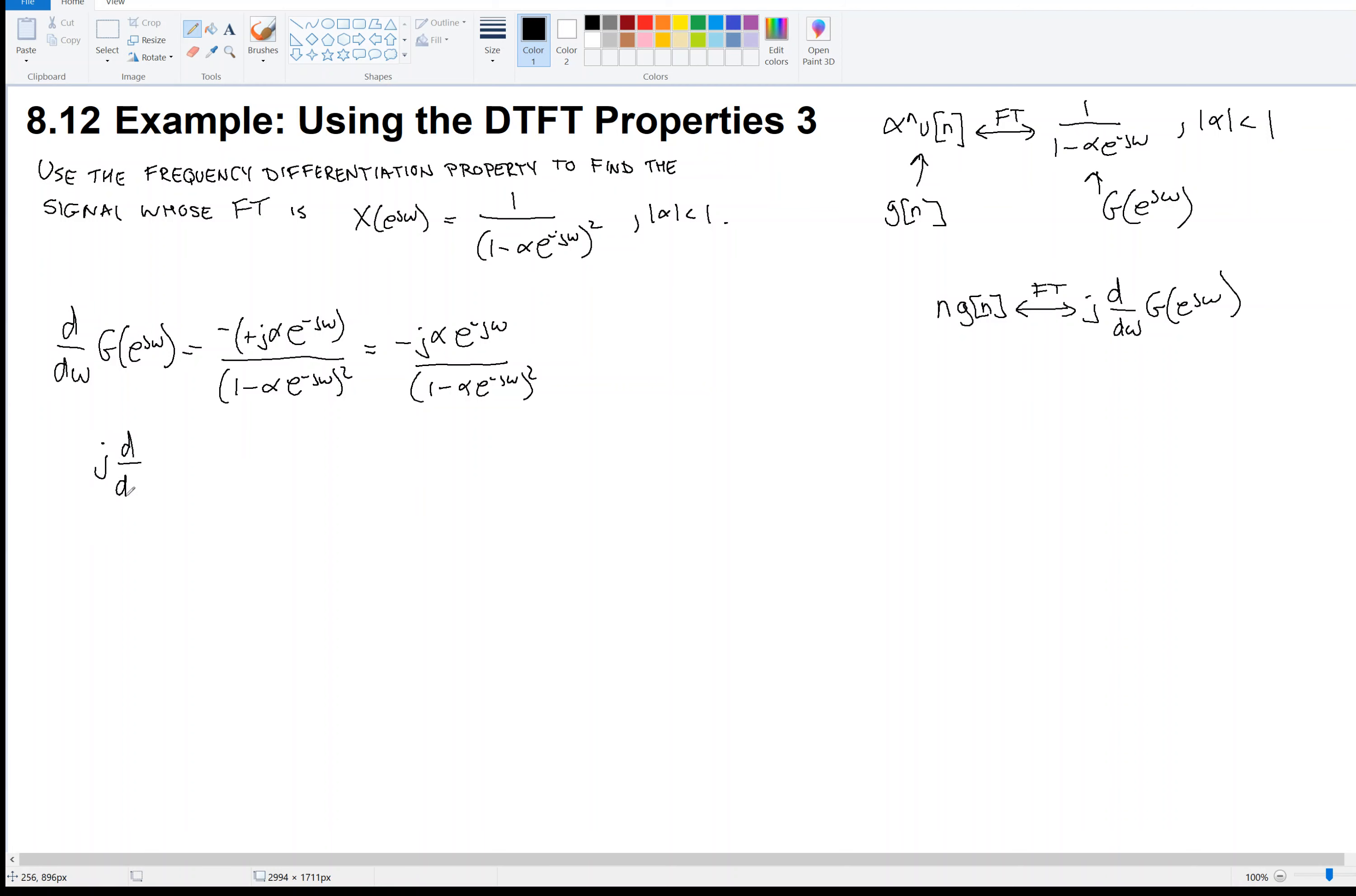Now we've got j times the derivative of capital G. When I take minus j times j, that gives me plus 1. So this just becomes α·e^(-jω) over (1 - α·e^(-jω))² like that. This resembles capital X, right? This is α·e^(-jω) times capital X. All right, that's looking good.